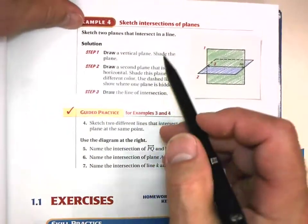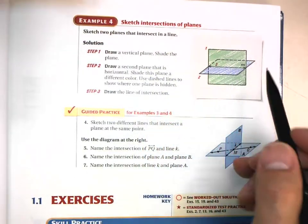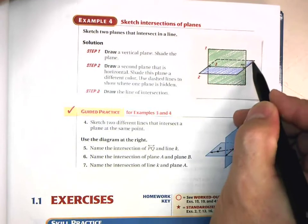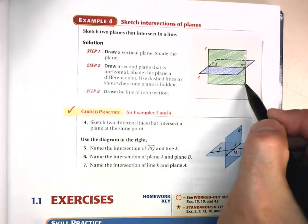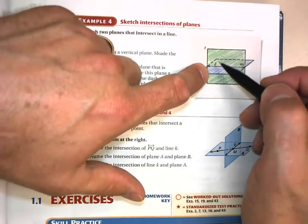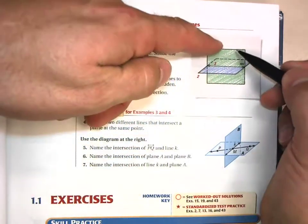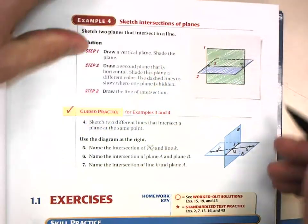Example four, sketch two planes that intersect in a line. And this is not easy. You've got to do one parallelogram, and then, in this case, they did a square there, and then make the back side, the part that if this was solid, you would not be able to see. So make that dashed behind that.